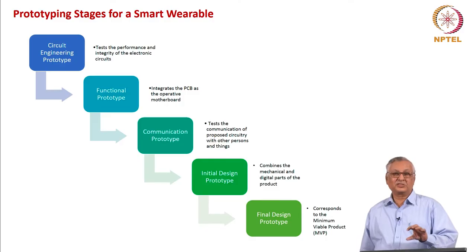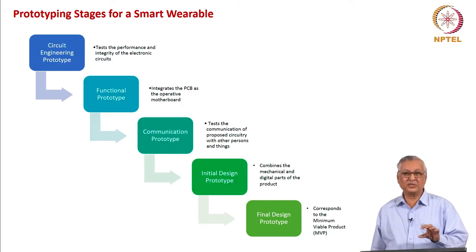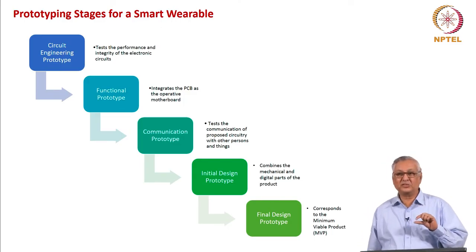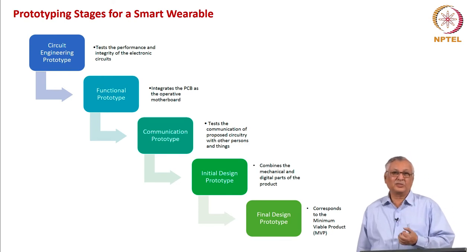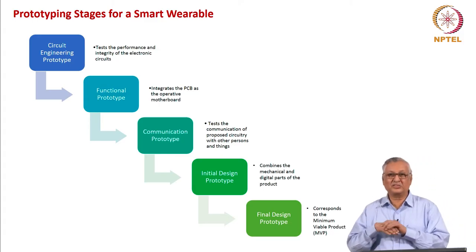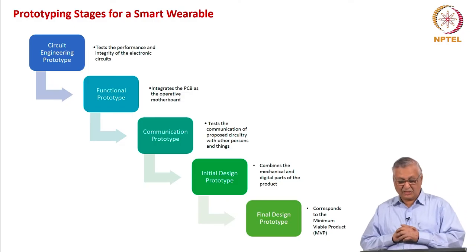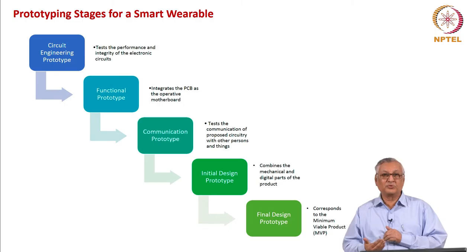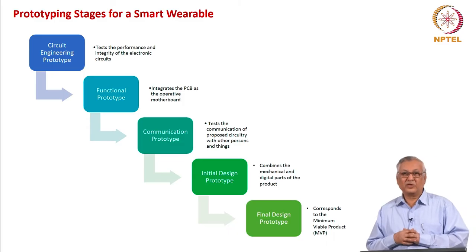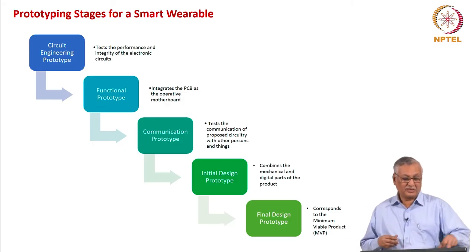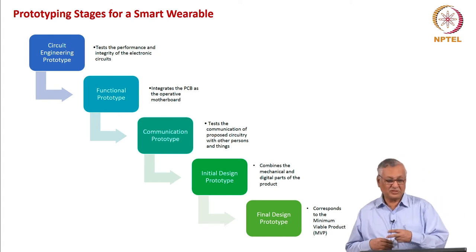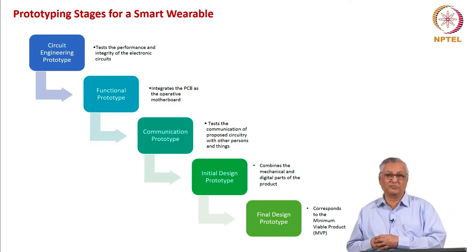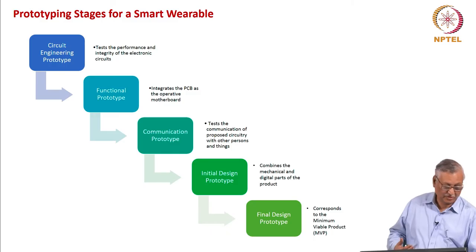Once it is established that the circuitry functions as an integrated mechanism in relation to the environment, you come to the actual design — whether you want a round or square watch, whether the thickness is 5mm or 10mm, or for the handheld medical diagnostic whether it fits in the palm or has a slider mechanism. These are part of the initial design prototype, combining mechanical and digital parts elegantly. Later, once the concept is proven, you come to the final design prototype, which is in a sense the minimum viable product. This process can be iterative — people go back to earlier phases and return with improved prototypes.